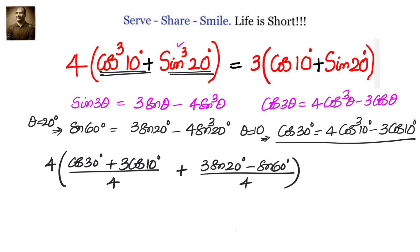Let us simplify this now. In the next step we can write that equals, we can take 4 out, then we have cos 30 is root 3 by 2, plus 3 cos 10, plus 3 sin 20, minus sin 60 is root 3 by 2.